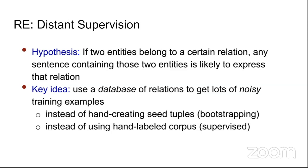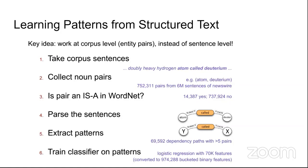Distant supervision requires less labeled data. The hypothesis is: if two entities belong to a certain relation, any sentence containing those two entities is likely to express that relation. The key idea is using a knowledge base to generate many noisy training examples. For instance, you might have a longer sentence about San Francisco and California rather than the exact sentence 'San Francisco is a city in California,' and weak supervision should still extract the relationship.